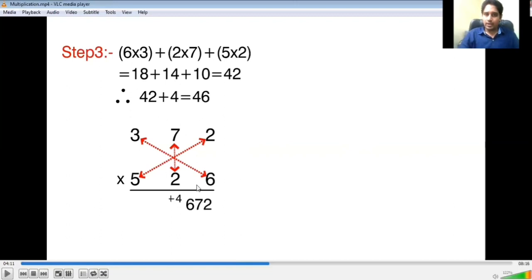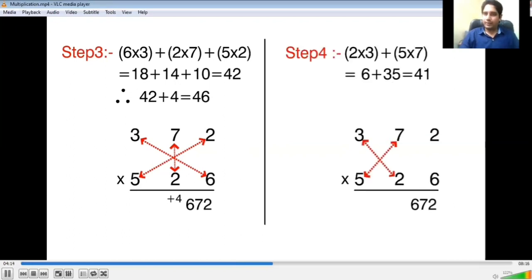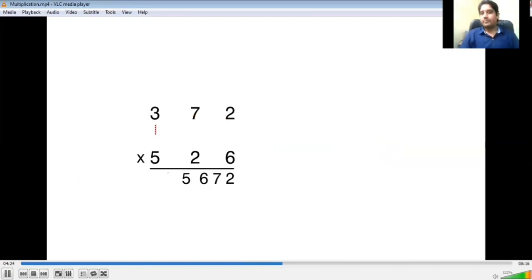Now you see 6's role is finished because there is no digit left for 6. But 2 will go to 3 and 5 will go to 7. So next step: 2 into 3 and 5 into 7, which is 6 plus 35, which is 41. Carry forward from the previous step was 4, so add that to get 45. Take 5, 4 will be carried forward. Now 2's role is also finished because there is no digit left. But 5 was on 7, so now the next step: 5 will get multiplied with 3. 5 into 3 is 15. Carry forward was 4, add that to get 19. Hence our result is 195,672.